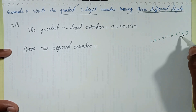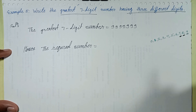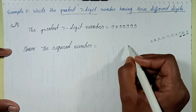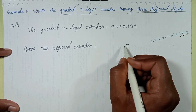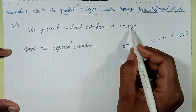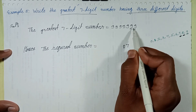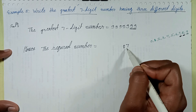This digit is placed in the units place and this number in the tens place. First of all, the seven digit number — we replace the last two digits: eight in the tens place and seven in the units place.